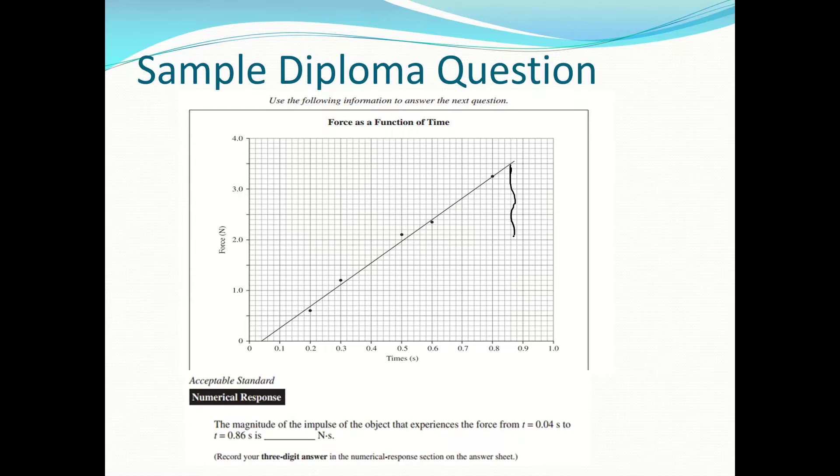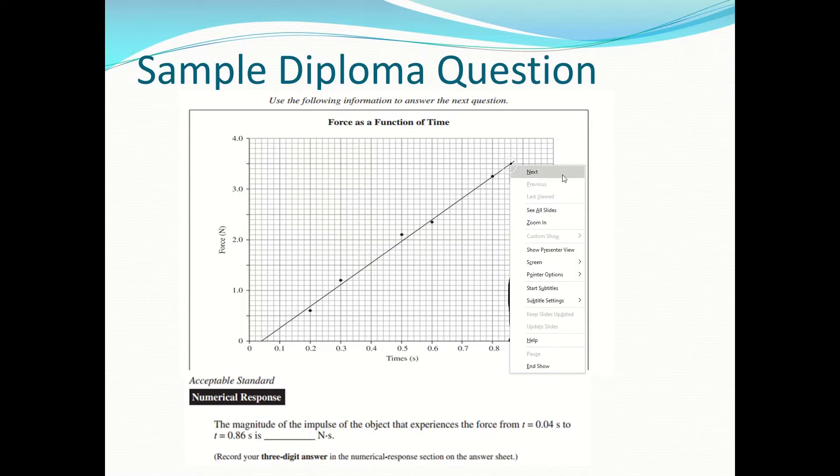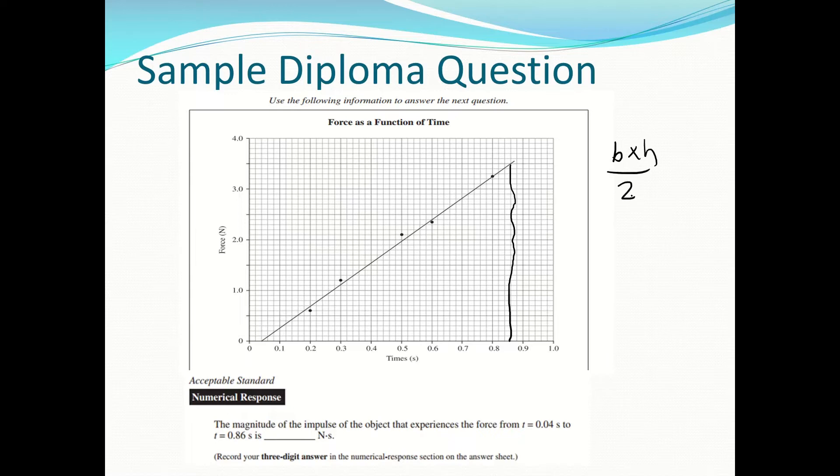With all the squiggles in there, that is where we want to go — not to the very top. We only want to go to 0.86. And because it's a triangle, we go base times height divided by 2.